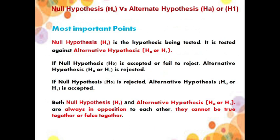Some of the most important points: null hypothesis is the hypothesis which is being tested and is always tested against alternate hypothesis. If null hypothesis is accepted, alternate is rejected. If null is rejected, then alternate is accepted. Both null and alternate hypothesis are always in opposition to each other and cannot be true together or false together. I hope all of you have now understood the concept of null hypothesis and alternate hypothesis.